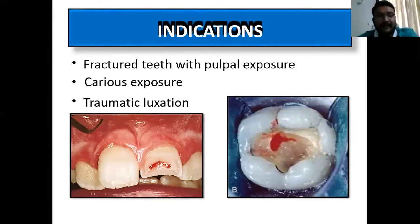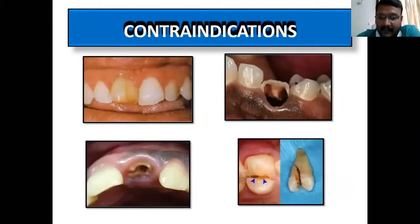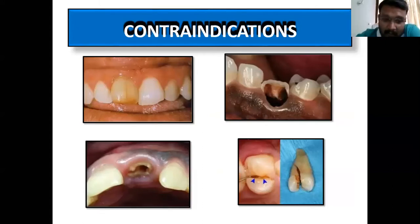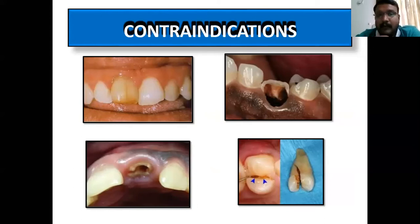The contraindications are self-explanatory: discolored tooth, non-vital tooth, long-standing carious lesion where the patient is having night pain — in those cases apexogenesis is contraindicated. Also root fractures, root resorption, and vertical tooth fracture are contraindications.